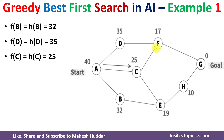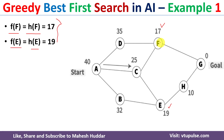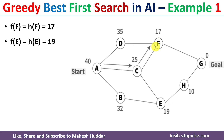We calculate the f values for these two nodes: f(F) = h(F) = 17, and f(E) = h(E) = 19. Between these two, 17 is the minimum, meaning node F is more closer to the goal node. So we select the action from C to F.